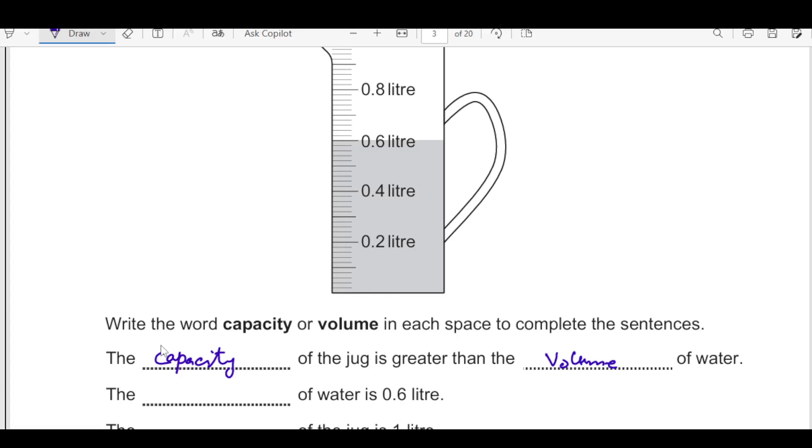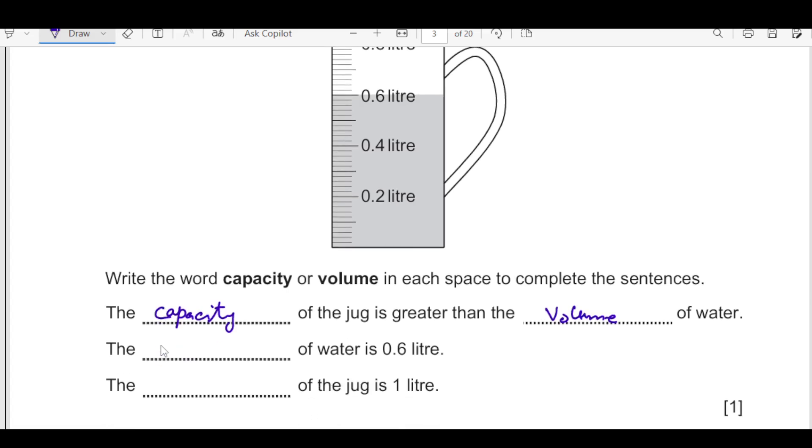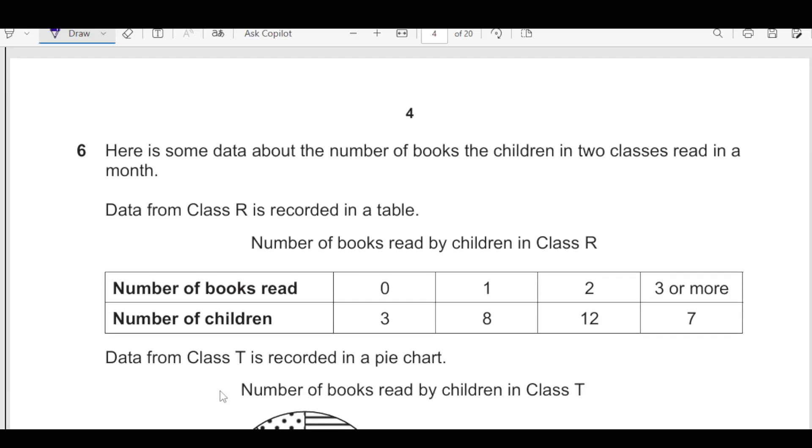The capacity of the jug is greater than volume of water. The dash of water is 0.6. As I told you this is the thing water inside, that is going to be the volume because we are not talking about the container. So this is going to be volume. The dash of jug is 1 liter. So that is capacity. Capacity of jug is 1 liter.